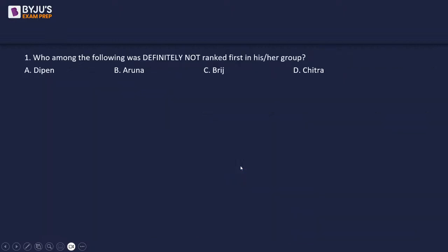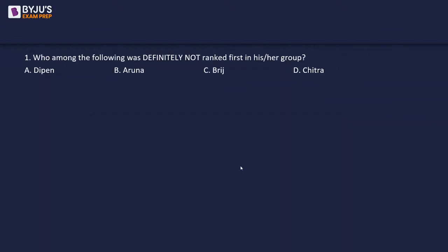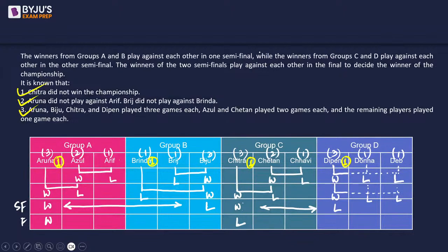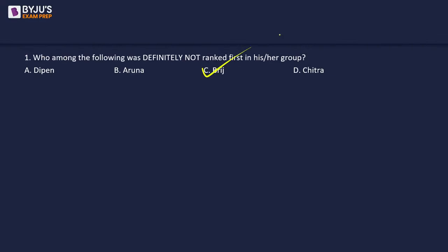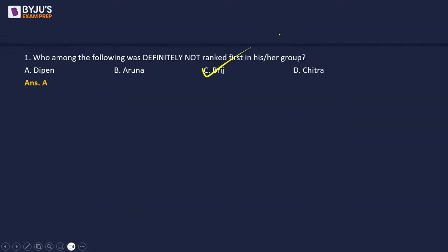Question 1: Who among the following was definitely not ranked first in their group? Options include Aruna, Brinda, Chitra, Dipen. Aruna is definitely first in Group A, Brinda in Group B, Chitra in Group C. In Group D, the first rank holder is Drona or Deb — not Dipen, since Dipen played the first match. So Dipen was definitely not ranked first.